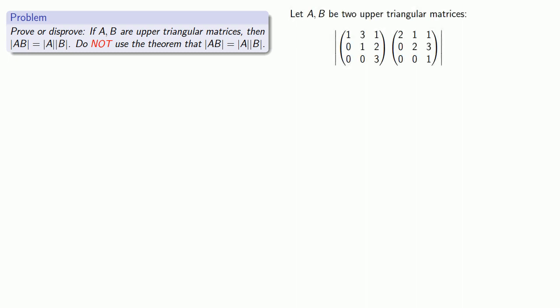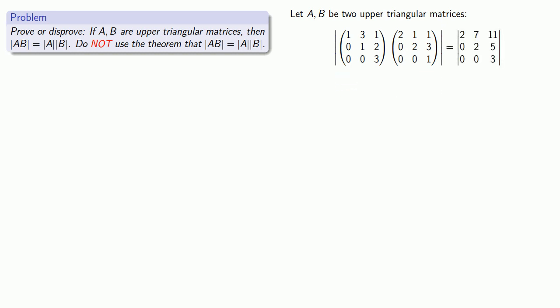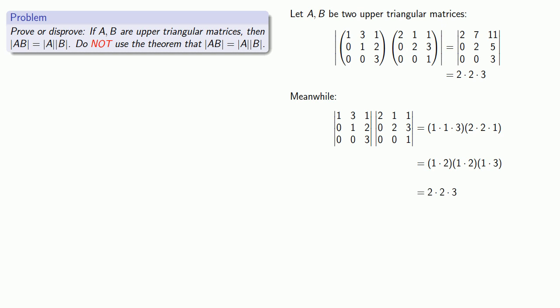So let's take two upper triangular matrices and multiply them, then find the determinant of the product matrix — which, because it's a triangular matrix, we know will be 2 times 2 times 3. On the other hand, if we find the determinants first, the determinant of the first matrix is 1 times 1 times 3, and the second is 2 times 2 times 1. Rearranging things, we find the determinants are in fact the same. And again, it's important to remember: an example is not a proof, but it can provide insight into how we construct the proof.